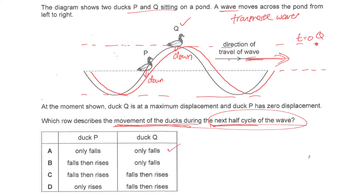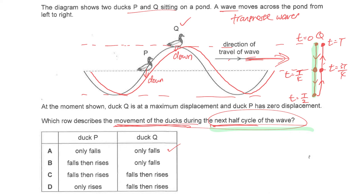Let's consider duck Q. Currently Q is at the highest point — this is time equals zero. As it goes down to the undisturbed position, the time will be a quarter of a cycle. As it continues down to the lowest point, that will be half a cycle. So throughout the half cycle, Q will be going down the entire time.